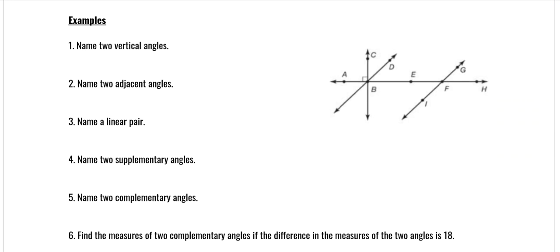Name two vertical angles — there are lots of them. This one and this one are vertical. This one and this one are vertical. This one and this one are vertical. You can also consider all of this and all of this to be vertical angles. On the other side, this one and this one are vertical, and this one and this one are vertical. So pick any two that have the same color. You cannot name it just by the vertex letter F — remember that — because you wouldn't know which angle you're talking about. It can only be named by the vertex alone if there's only one angle.